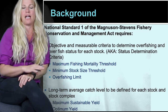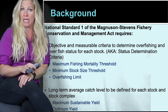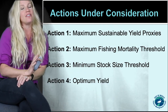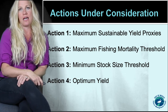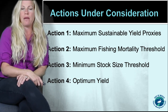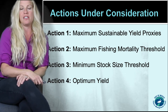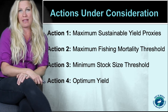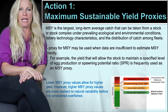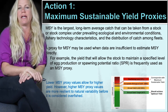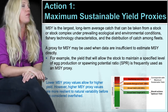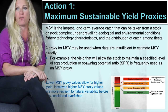As we get deeper into this document I'll explain what each one of those is. We're considering four actions in this amendment and I'll walk you through each one and present the different alternatives being considered by the Council. Action one considers setting maximum sustainable yield, or MSY proxies, for some of our reef fish and for Red Drum.